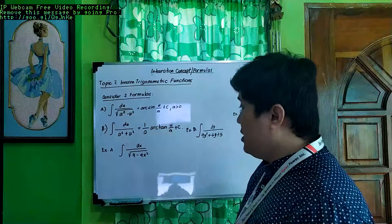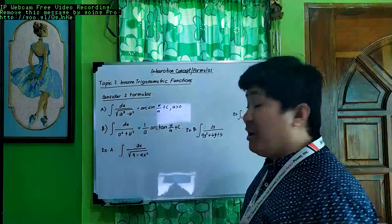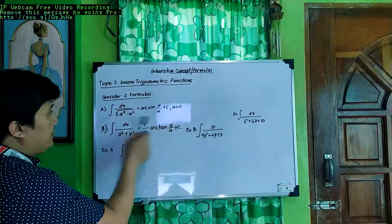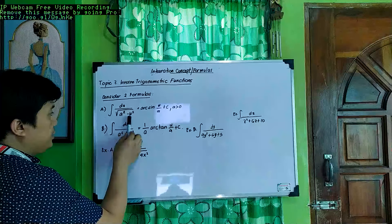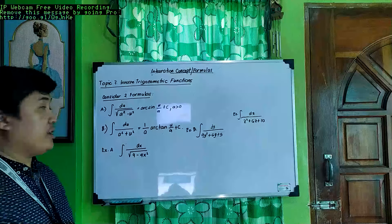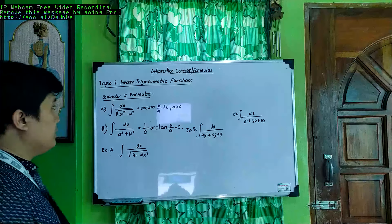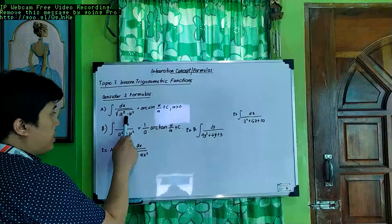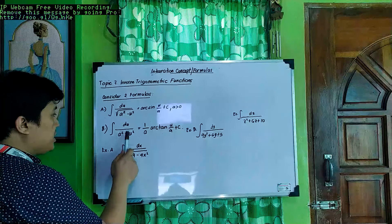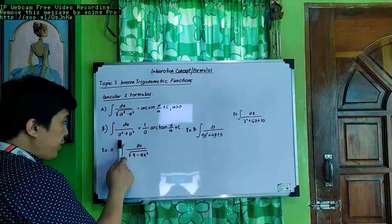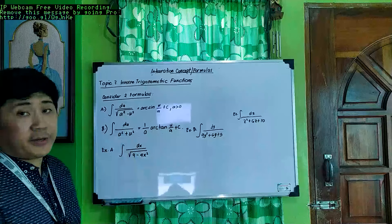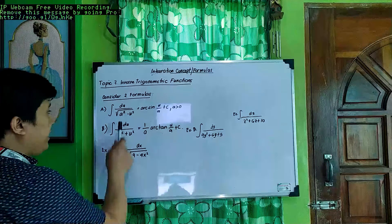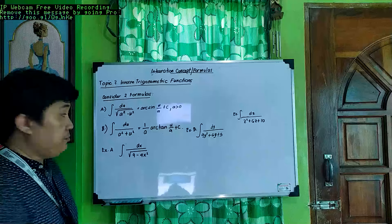Let's try some examples. For the first formula, you cannot interchange u minus a squared, because that's a different formula for other functions. In inverse trigonometric functions, it is always a squared minus u squared. For the second formula with addition, you could have u squared plus a squared or a squared plus u squared — the result is the same. But for the first formula with subtraction, you cannot interchange your u and a.